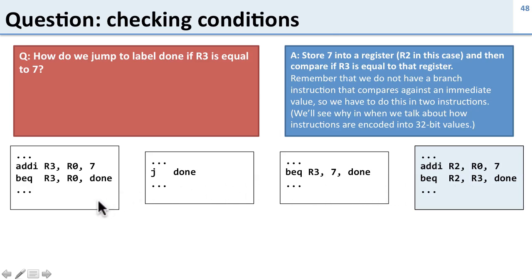These other options don't work. This instruction will put 7 into R3, which is a problem because we'll replace whatever value was there before. Jump done will always jump regardless of R3's value. This instruction looks like it would work, but there's no instruction like this in MIPS. There's no branch equal instruction that has a constant value for comparison.